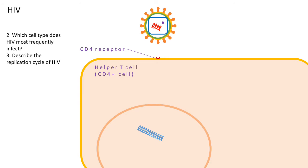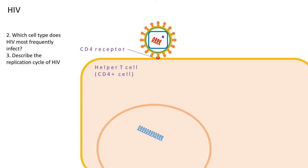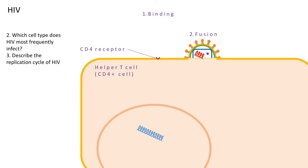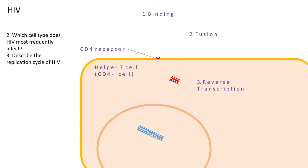Let's take a look at the replication cycle. First, the virus attaches to the CD4 receptor via its attachment proteins. This binding process allows the virus to fuse with the cell membrane, and it releases its contents — specifically, we'll look at the RNA and reverse transcriptase.